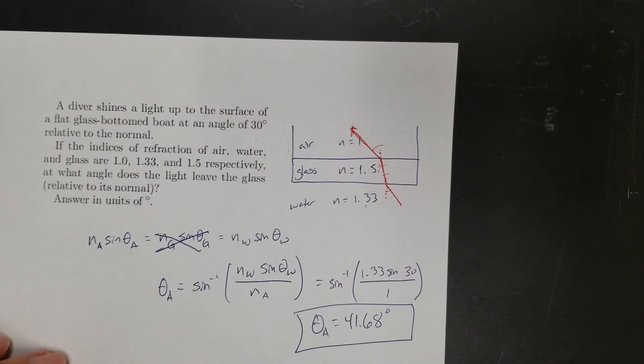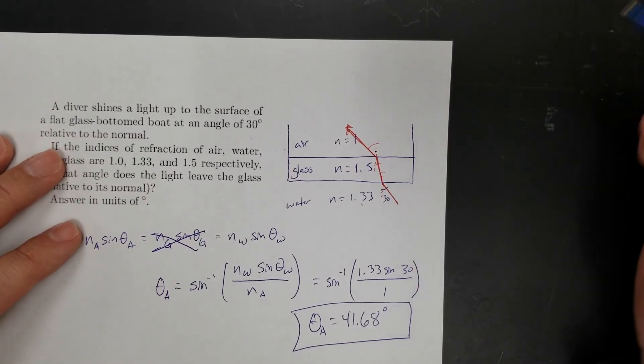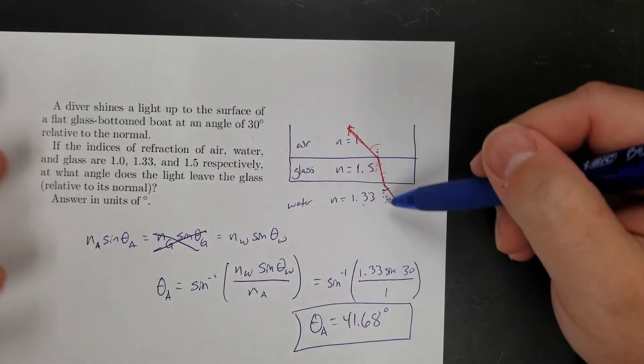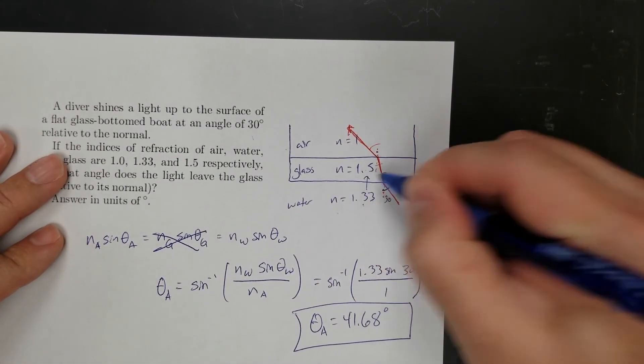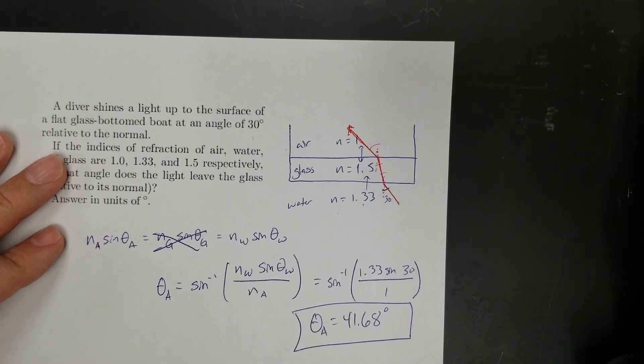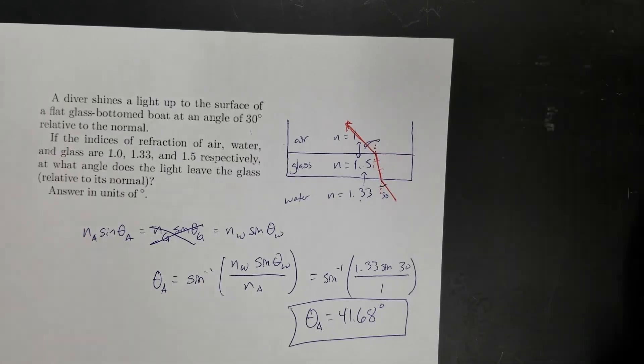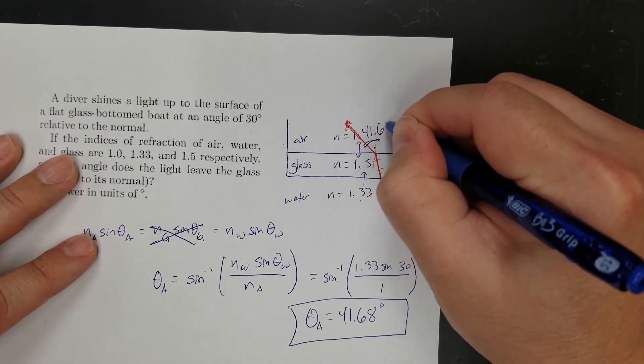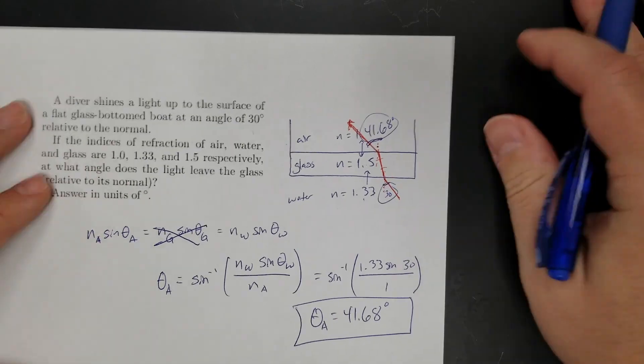And does it make sense? Again, ask yourself that question. So it went in here, I said at 30 degrees. And by reasoning, I figured that it would come out at a greater angle because 1.33 to 1.5 is not as much as the difference between 1.5 and 1. There's a bigger difference there. So there's going to be a bigger angle. And that makes sense to me because I get 41.68 degrees, which is a bigger angle than down here. So it all works out.